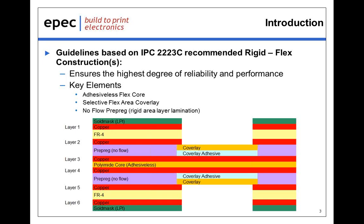From the image below, a few of the key elements are: first, the use of an adhesive-less flex core; secondly, a selective flex area cover lay design where the cover lays exist only on the flex areas and do not extend within the rigid areas; and then the use of a no-flow prepreg to achieve your layer lamination within the respective rigid areas.